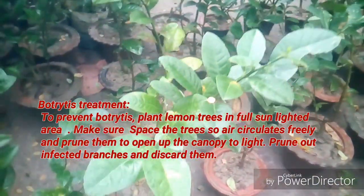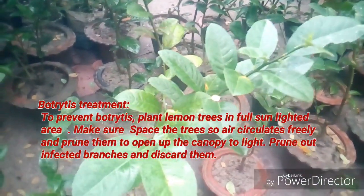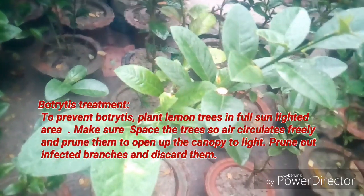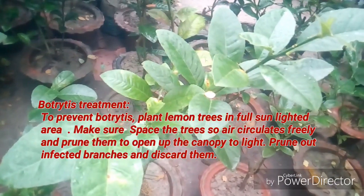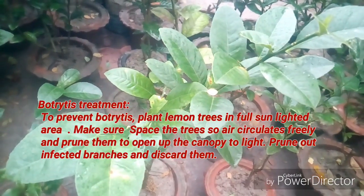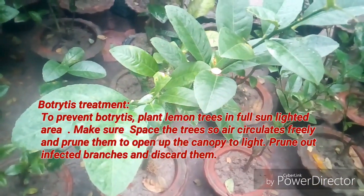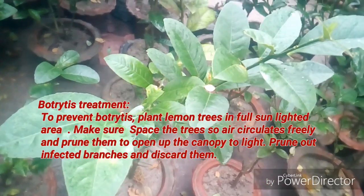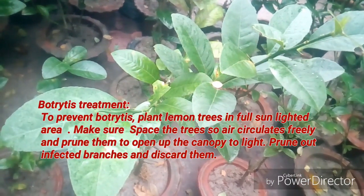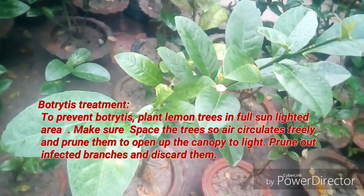To prevent botrytis, plant lemon trees in a full sunlit area. Make sure to space the trees so air circulates freely, and prune them to open up the canopy to light. Prune out infected branches and discard them.